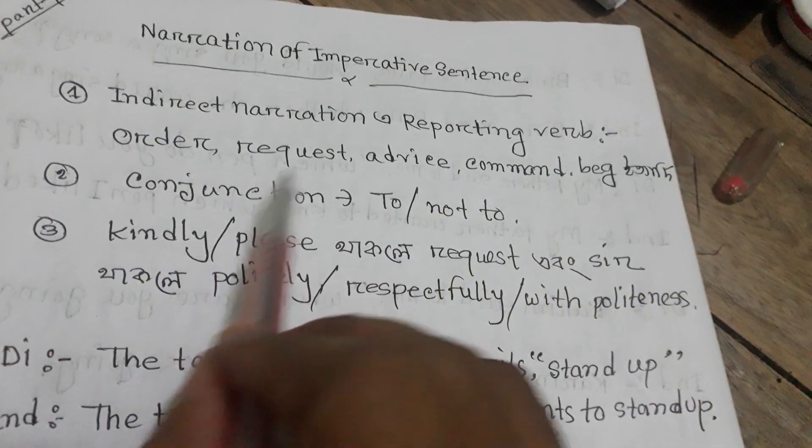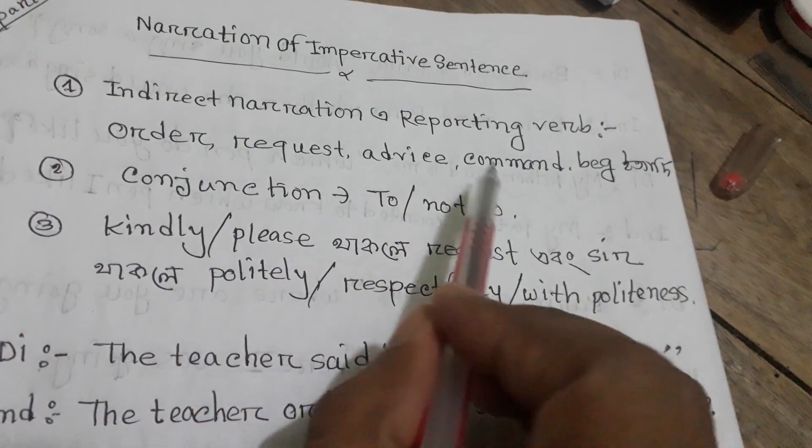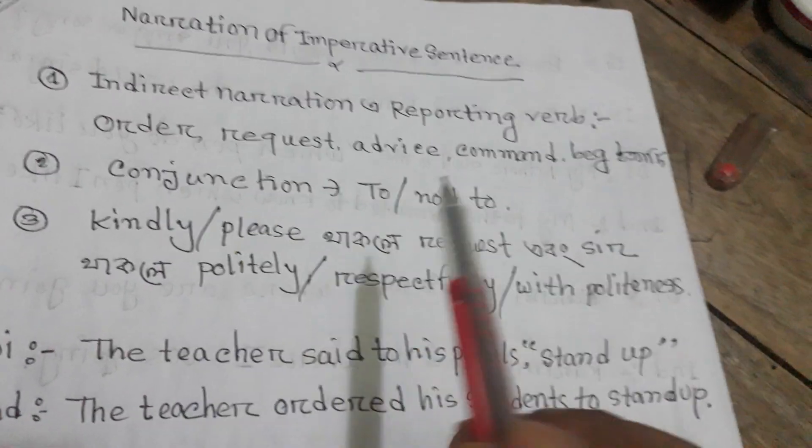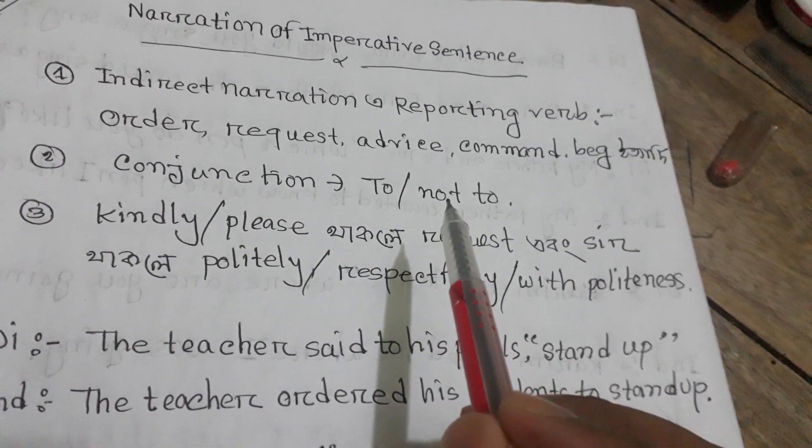The reporting verb of indirect narration can indicate: order, request, advice, or command — depending on the circumstances of the sentence.